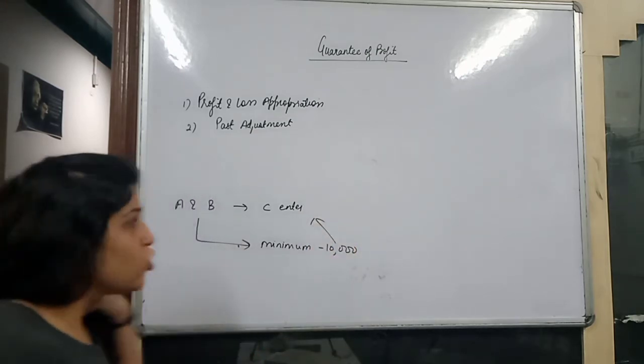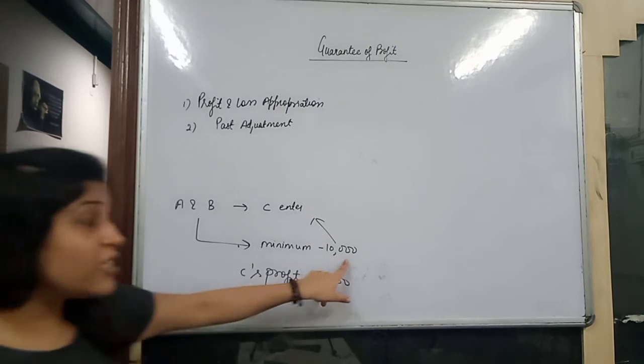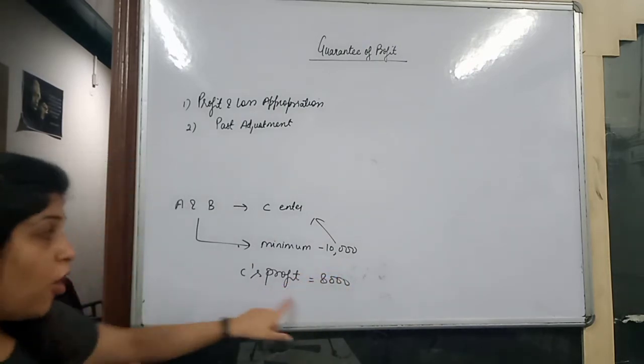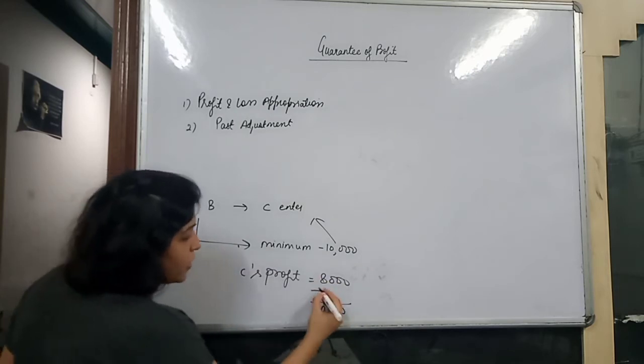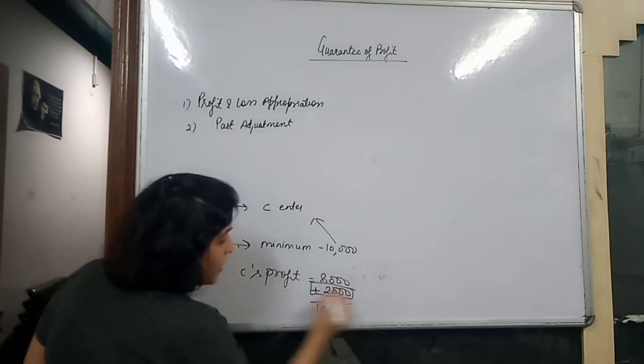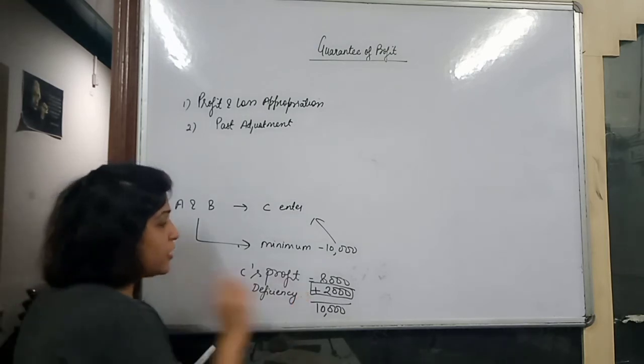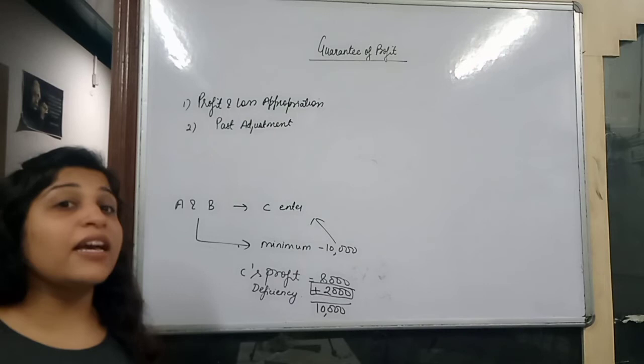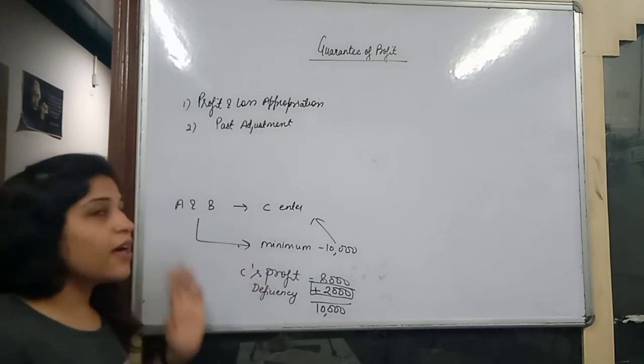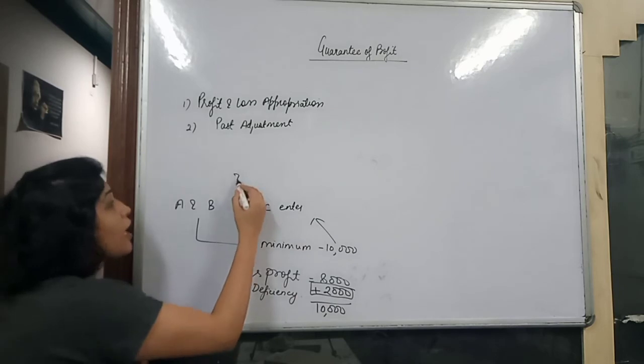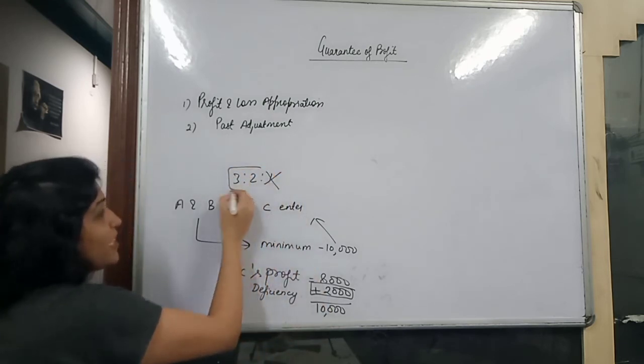Then, consider what C's actual profit was. If there is a deficiency - if actual profit is less than guaranteed - we need to address it. If the question specifies that A or B individually bears the deficiency, we deduct from that partner. If nothing is specified, both A and B bear the deficiency.